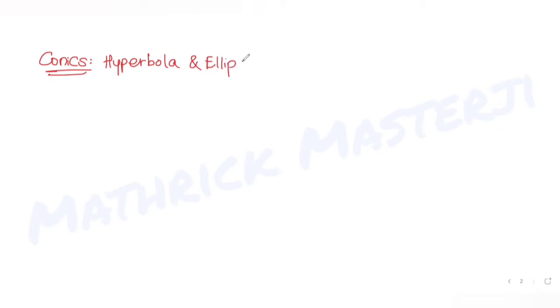Hi guys, I hope you are all doing well. Today's question is taken from the topic of conics, specifically from the concepts of hyperbola and ellipse. The question tells us: if theta is between 0 and π/2 (that is, 0 and 90 degrees),